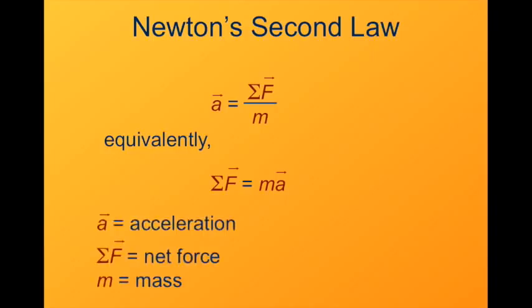In this, A is the acceleration of the object. Sigma F, the sum of all forces on the object. And M is the object's mass. It's important to remember that this sigma F is the sum of all forces acting on the object.